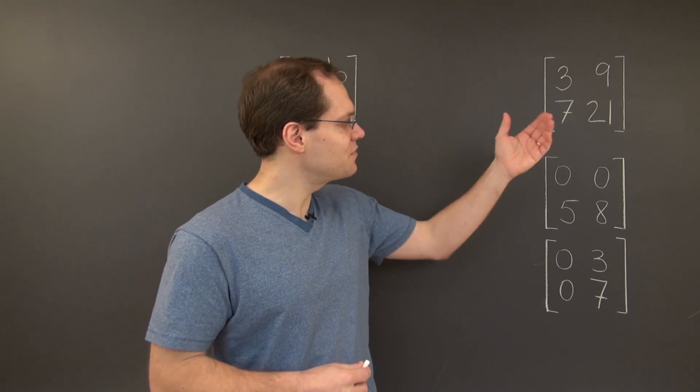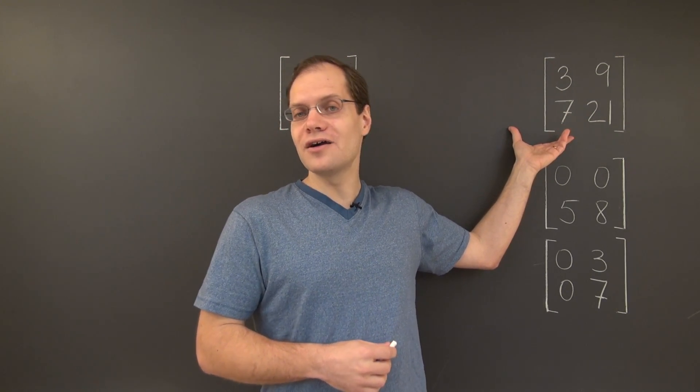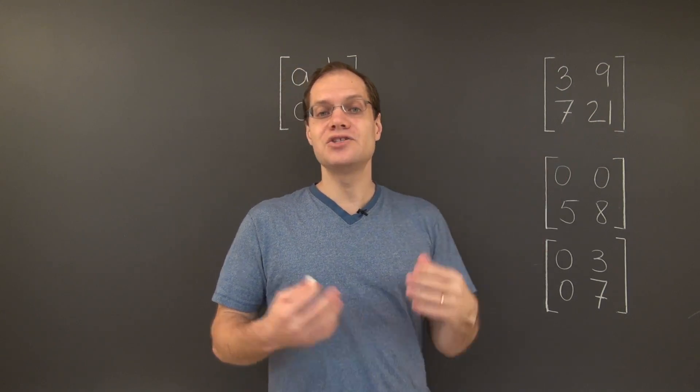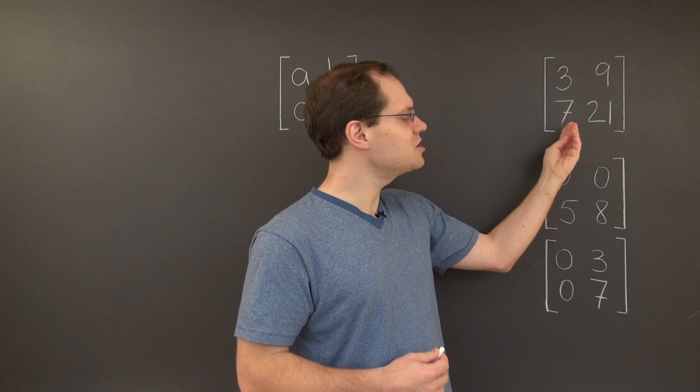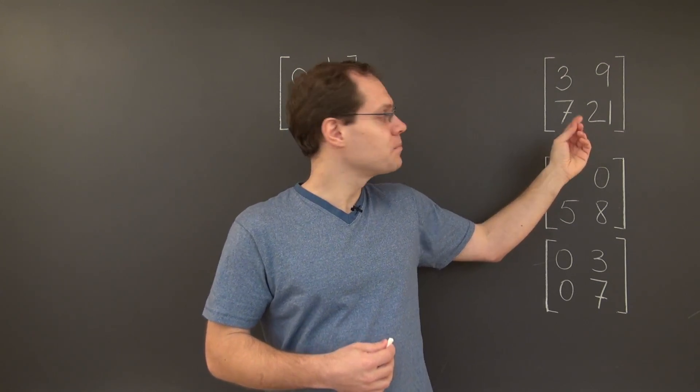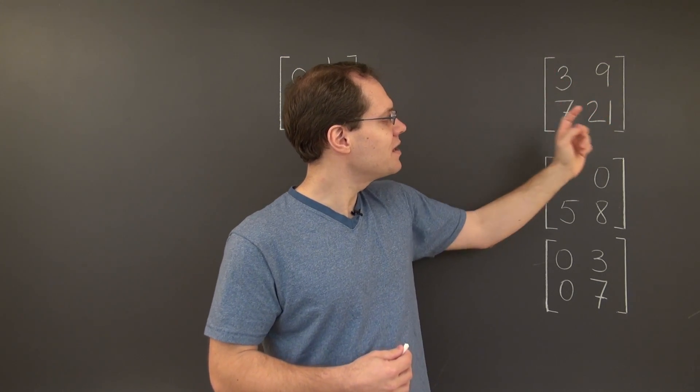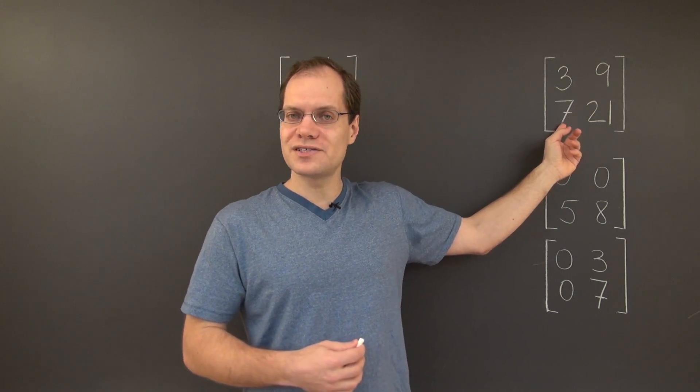For example, the columns of this matrix are linearly dependent. How do we notice that? Well, we observe that the second column is proportional to the first. Why? Because 9 over 3 equals 21 over 7.